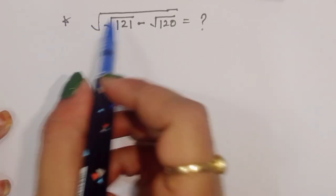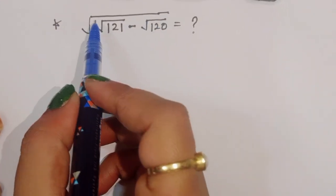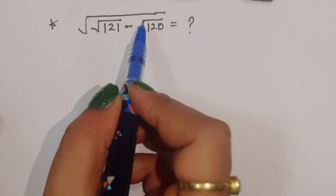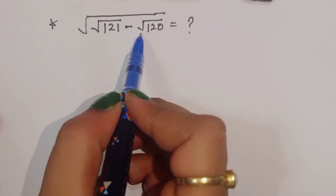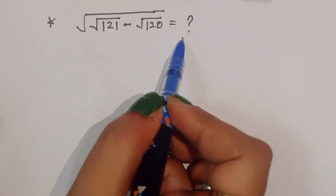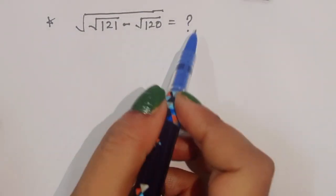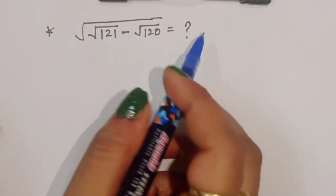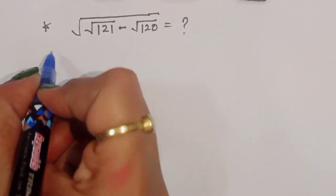The question is: given the square root of (√121 - √120), what is the value? We have to find out the value of this term. Let's see the solution.